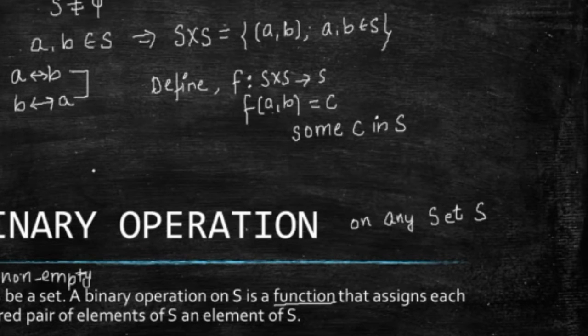With binary operations, comes a notation, because every time it's not feasible for us to write, you know, a function, defining a function S×S to S, and then writing in this way. So, we denote binary operation by this symbol, which is star. So, we denote binary operations with the symbol star, and we write A★B is C.